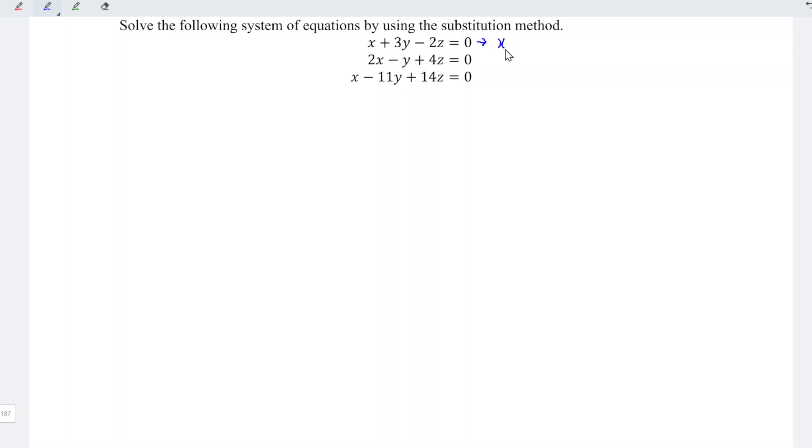This can be written as x is equal to minus 3y plus 2z, and this is equation 1. This is equation 2 and this is equation 3.